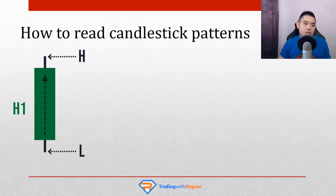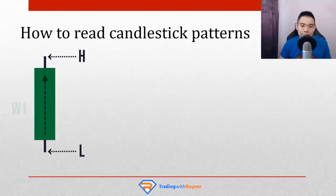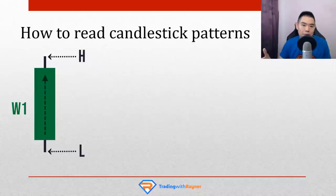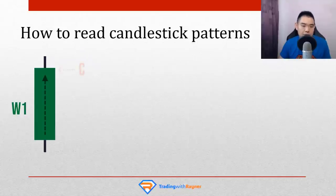If we change to a different time frame, say the weekly time frame, the concept is the same. The top of the upper wick is the highest price point over the past one week, and the bottom of the lower wick is the lowest price point over the past one week. The opening price is where the candle body begins, and the closing price is where it ends.